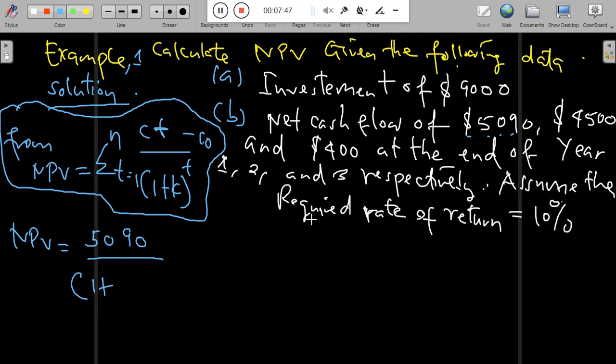The required rate of return is 10%, so we plug in 0.1. When you take 10% divided by 100, it gives you 0.1. We plug in 0.1 raised to the power of 1, then plus the second year, that is $4,500 divided by 1 plus 0.1 raised to the power of 2.